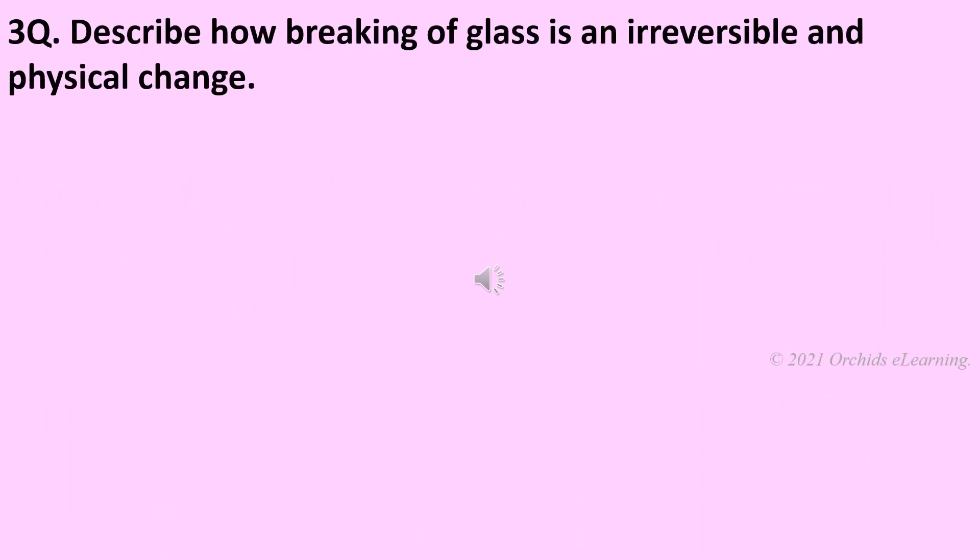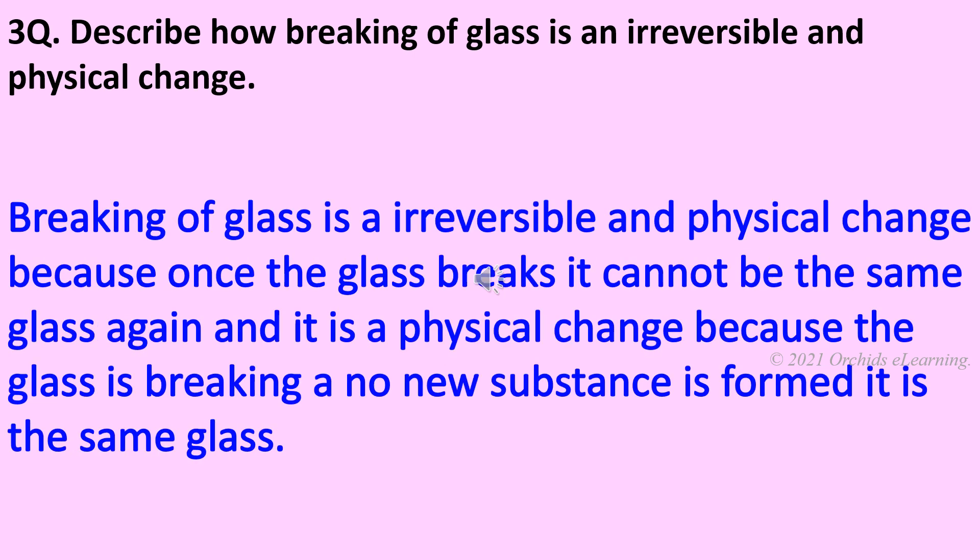Describe how breaking of glass is an irreversible and physical change. Breaking of glass is irreversible and physical because once the glass breaks, it cannot be the same glass again. It is a physical change because the glass is breaking but no new substance is formed — it is the same glass.